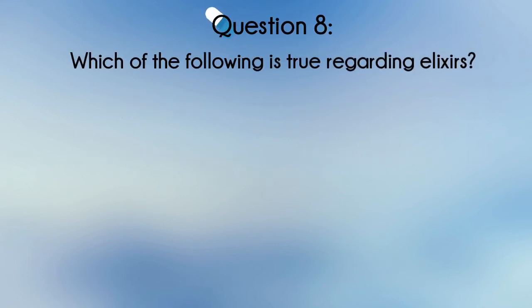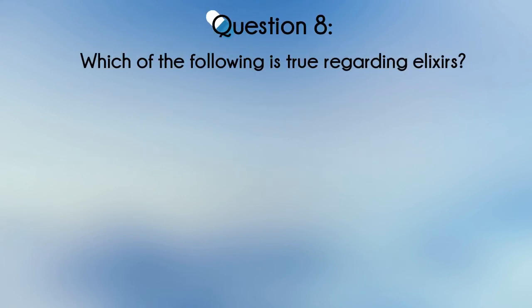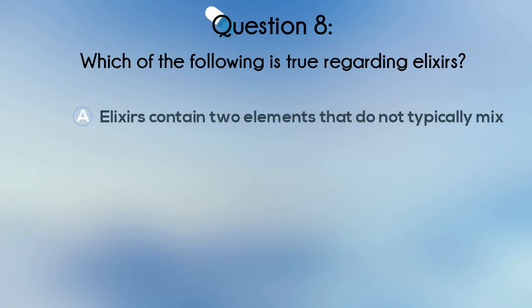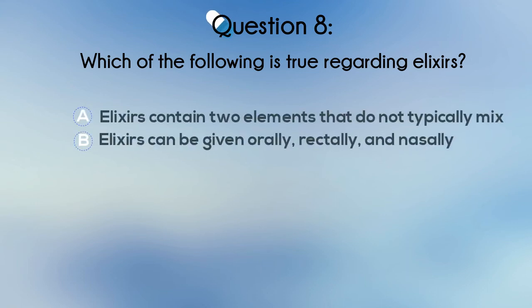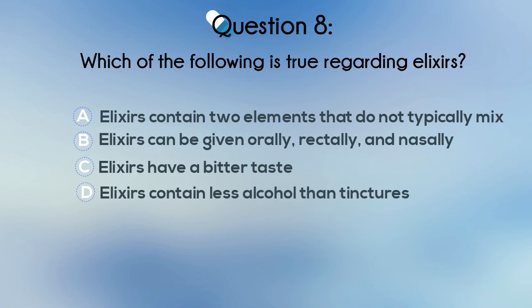Question 8. Which of the following is true regarding elixirs? A. Elixirs contain two elements that do not typically mix. B. Elixirs can be given orally, rectally, and nasally. C. Elixirs have a bitter taste. Or D. Elixirs contain less alcohol than tinctures.